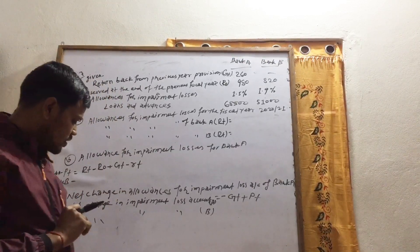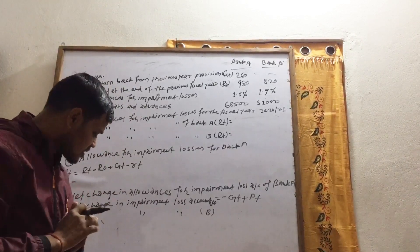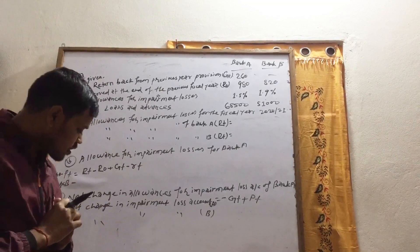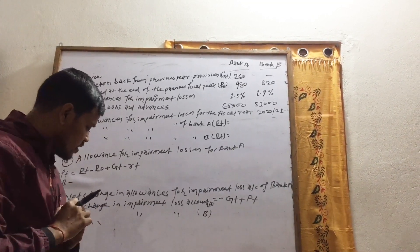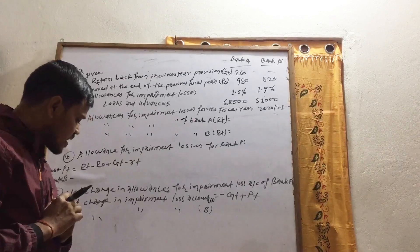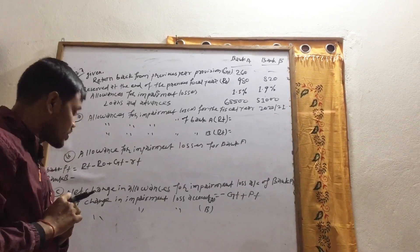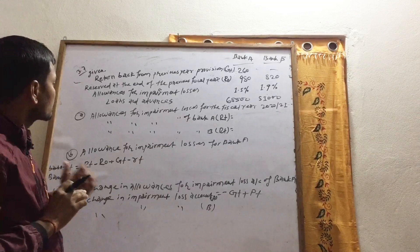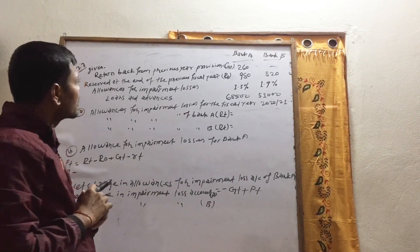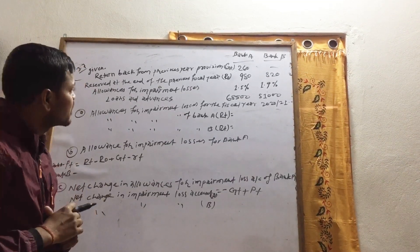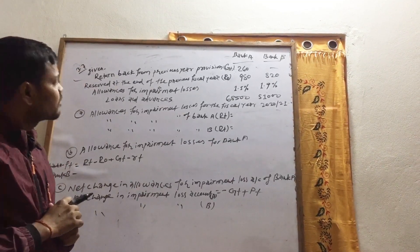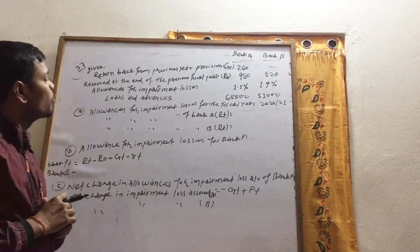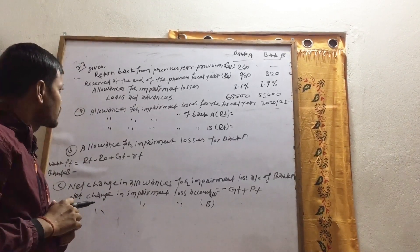The question further states: Bank A, on average, had to maintain 1.5% of total loans and advances and bills purchased as allowances for impairment losses. Bank A has to maintain 1.5% of total loan losses and advances.